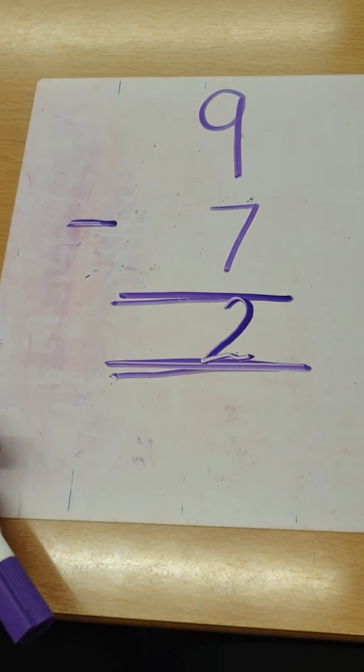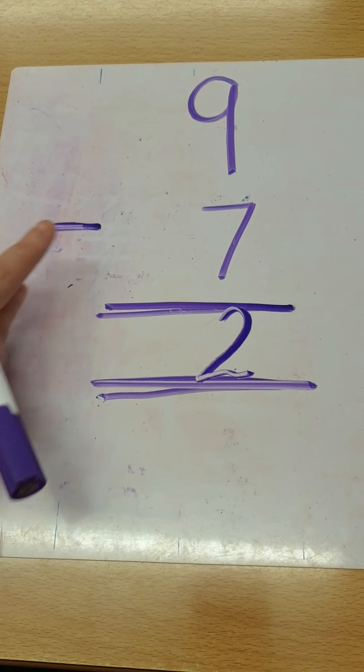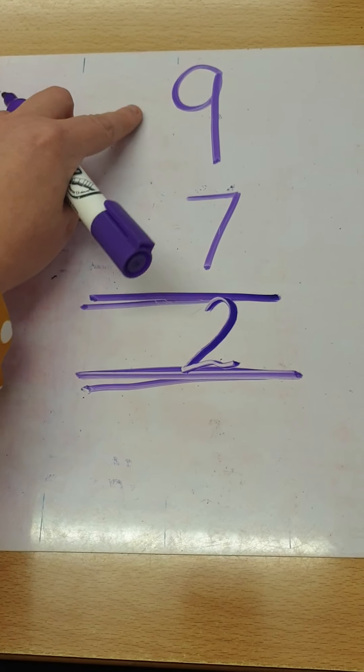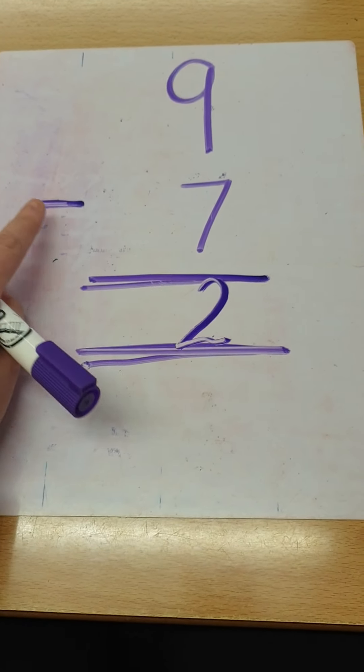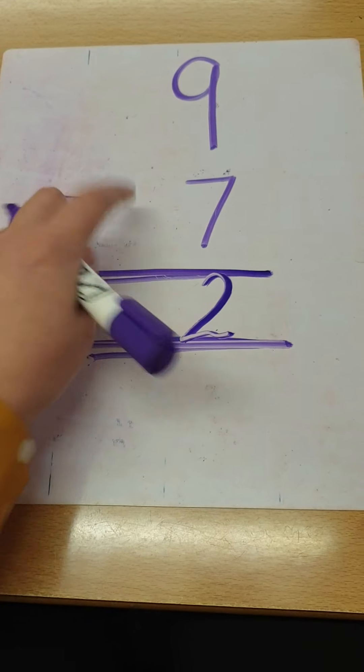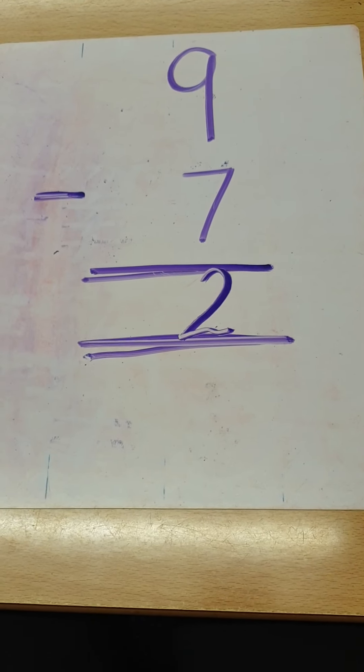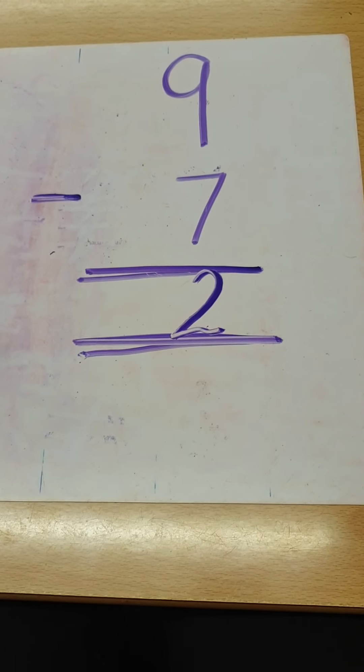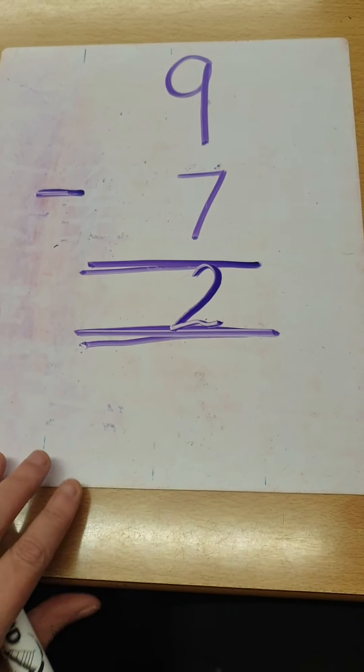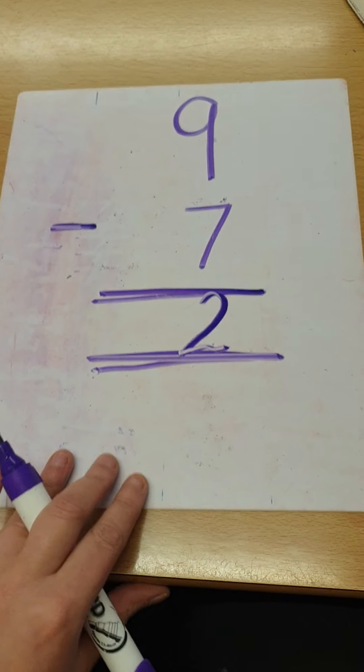Let's have a look again. As you can see I've got no tens, so I've got zero take away zero, which equals exactly zero. Let's have a look at another one.